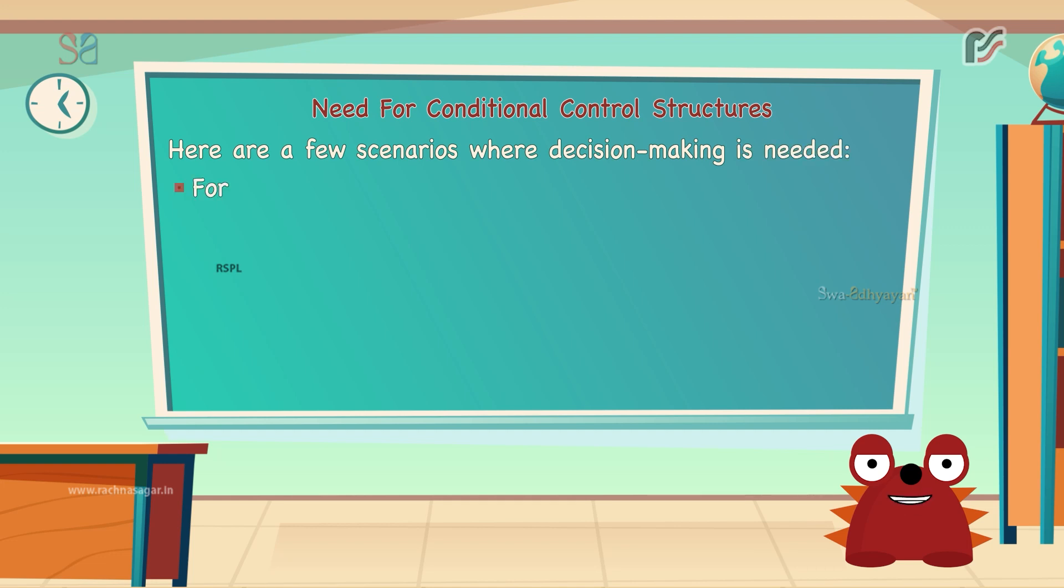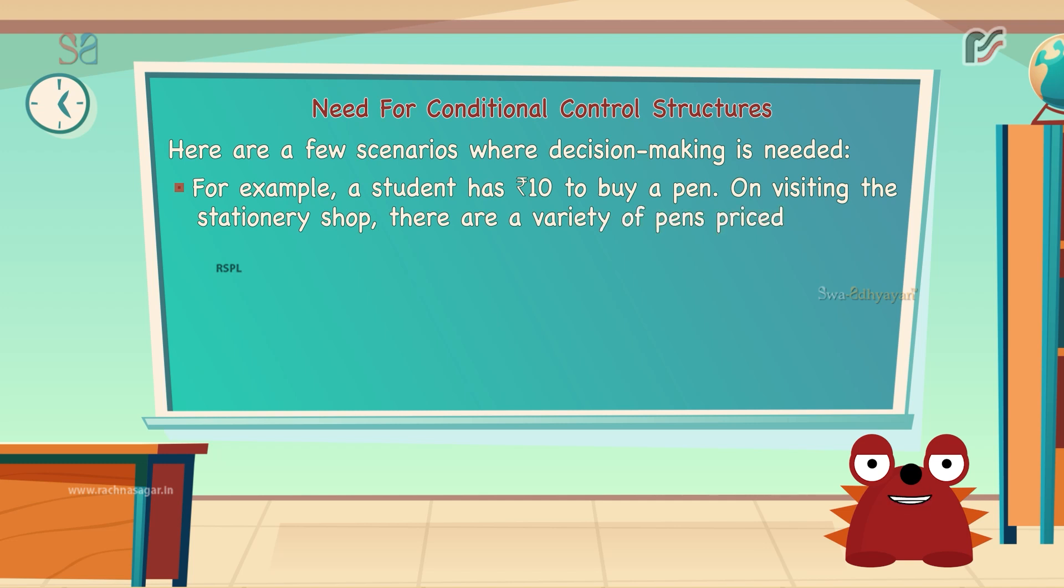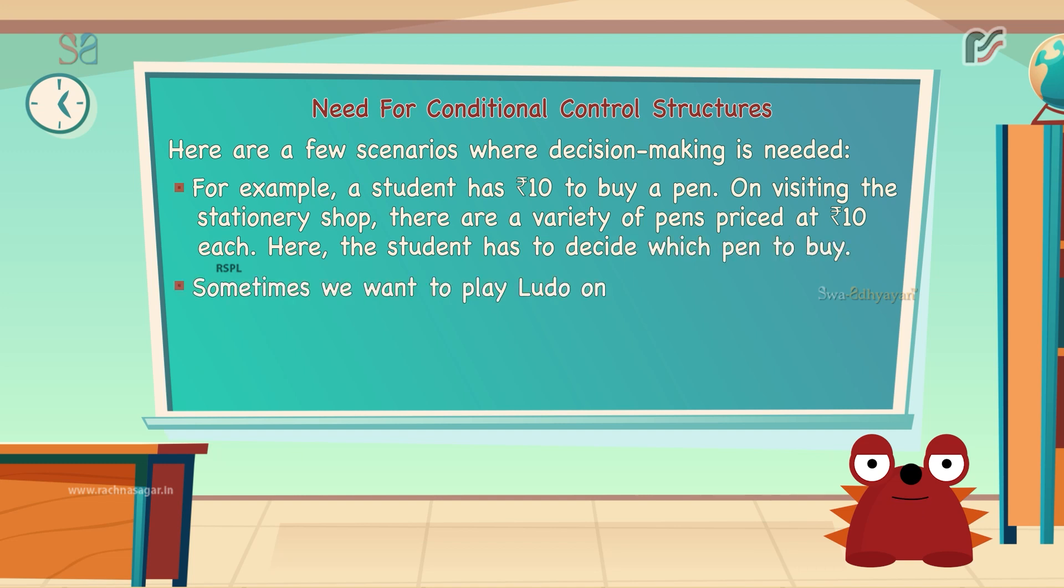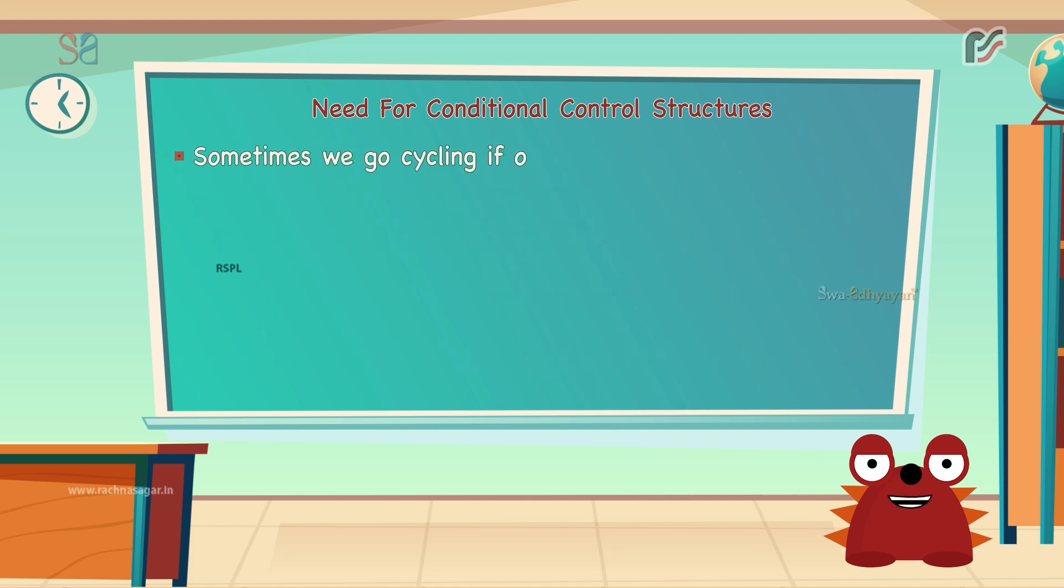Here are a few scenarios where decision making is needed. For example, a student has 10 rupees to buy a pen. On visiting the stationery shop, there are a variety of pens priced at 10 rupees each. Here, the student has to decide which pen to buy. Sometimes when we want to play Ludo on our phone when it's a Sunday. Sometimes we order ice cream online if the day is sunny. Sometimes we go cycling together with friends.